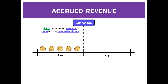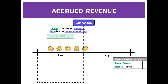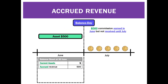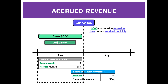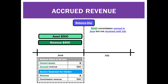So at the end of June, in our financial reports, we'll have a balance sheet which lists accrued revenue — and that is going to be a current asset: accrued commission revenue. We'll also have in our income statement $500 of commission revenue in the revenue section.